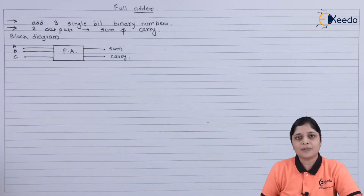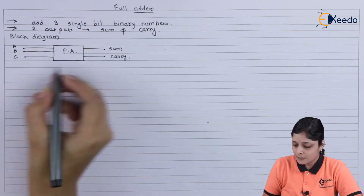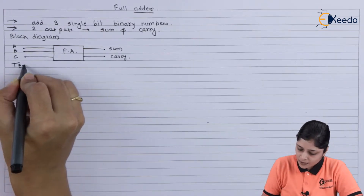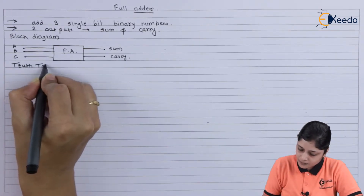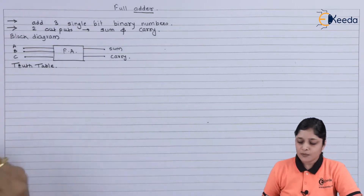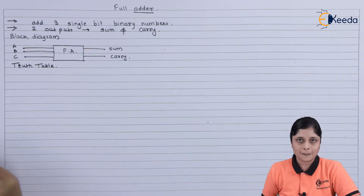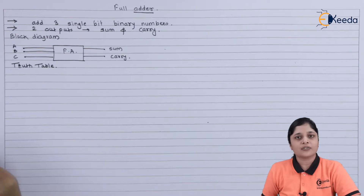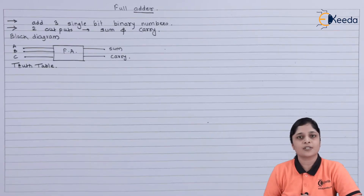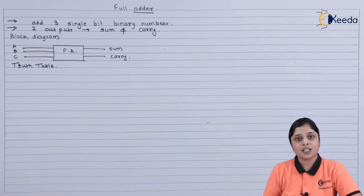The next step is to design the truth table. First of all, you have to check how many variables are present. The number of input variables present here are three, so how many combinations are you going to use? Zero to seven, meaning eight combinations.